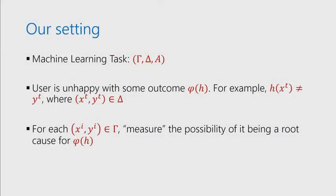In our setting, we are given a machine learning task, and the user or the consumer of the machine learning task is unhappy with some outcome, phi of H, where phi is some predicate over the learned classifier H. For example, it could be a misclassification over a test point X_T and Y_T, or more generally, it could be a predicate that bounds the number of misclassifications of the test set. For each point in the training set gamma, we'd like to measure the possibility of it being a root cause for the unhappiness of the violation.